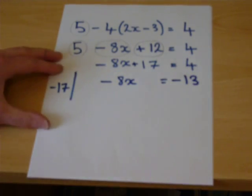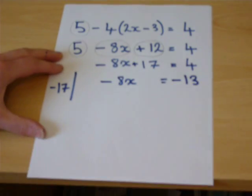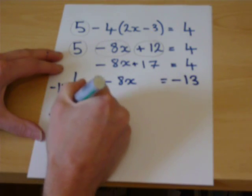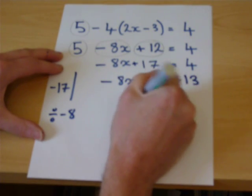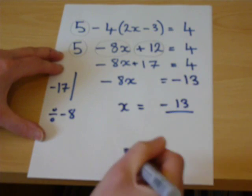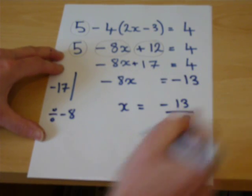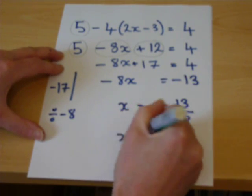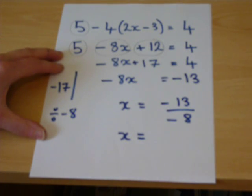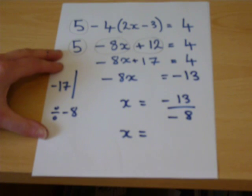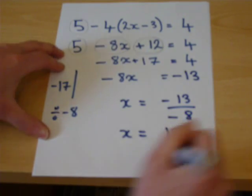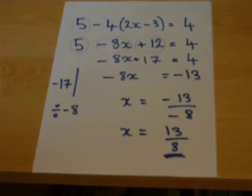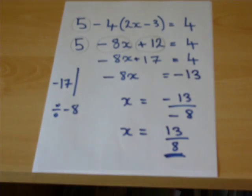To finish off, there is a minus 8 before the x, so we divide by minus 8. x equals minus 13 divided by minus 8. In this situation, where there are two negatives, they both cancel out, and x is plus 13 over 8. That is the solution to that particular equation.